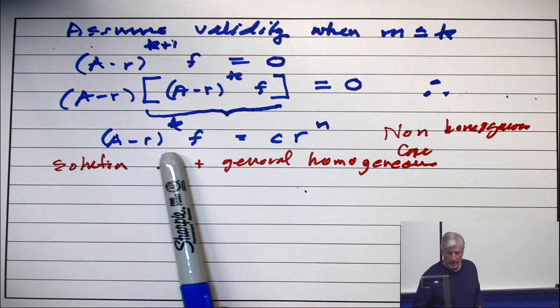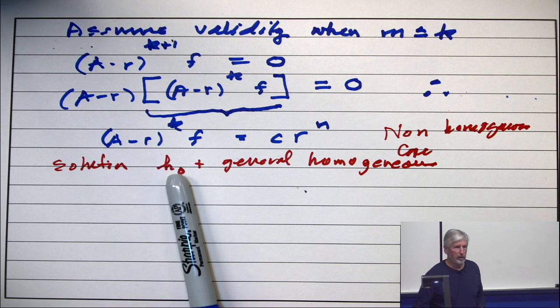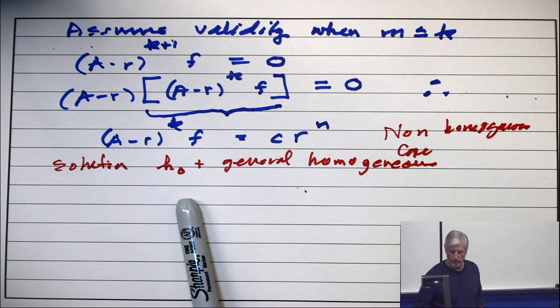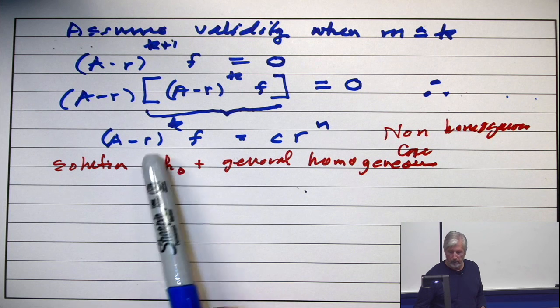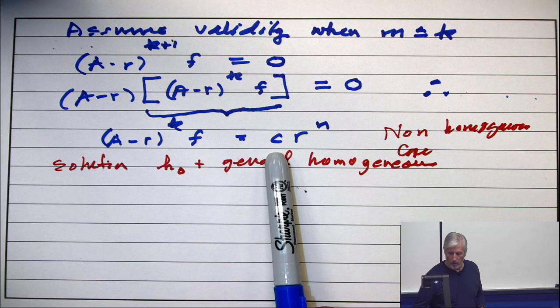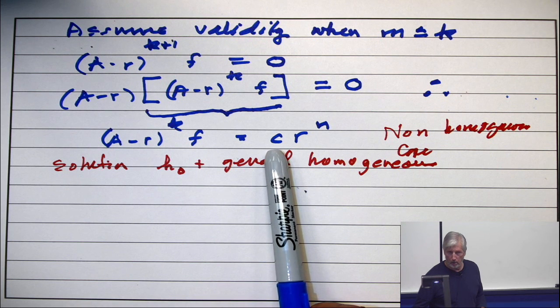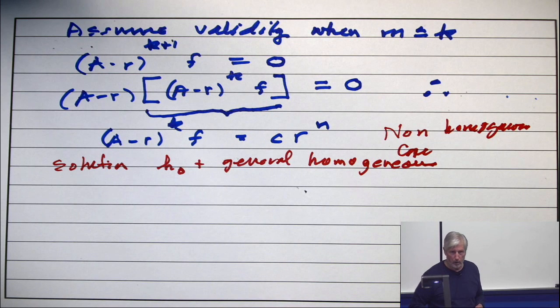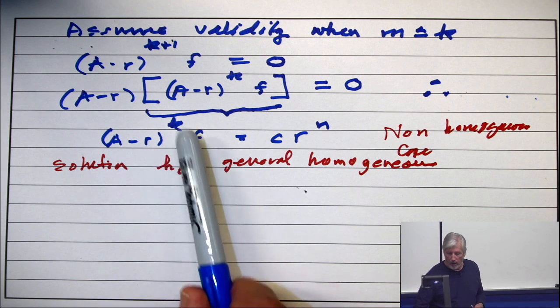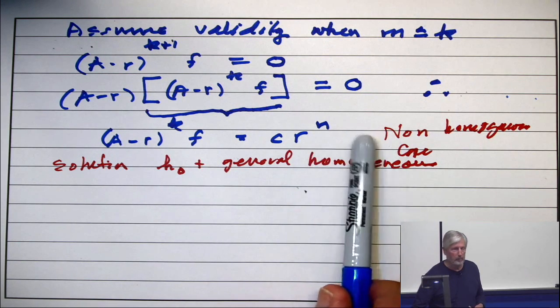Okay. Now, the corollary comes to the rescue here. The corollary comes to the rescue. Because here is a polynomial. One term. Perfectly good polynomial. And (a-r) on f is a polynomial times r to the n.